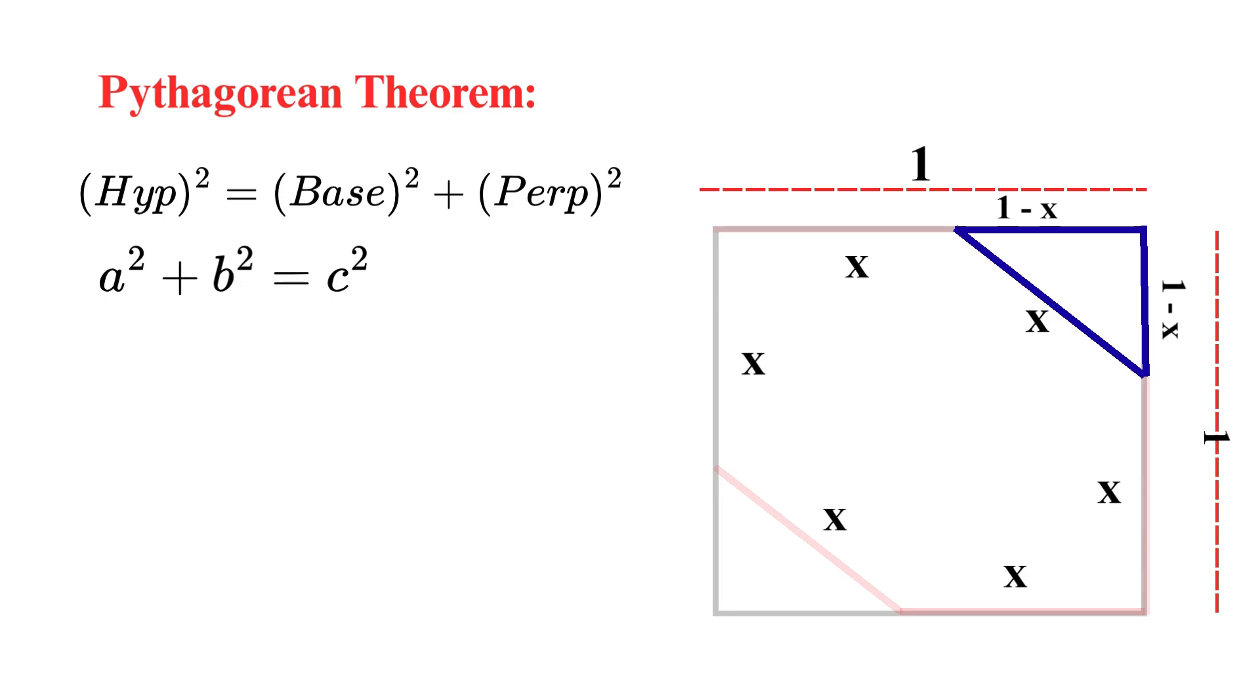So, let's apply this to our triangle. First, we need to identify which side is the hypotenuse. Remember, it's the side across from the right angle. In our case, that's the side with length x, the hexagon's side. And what are the two legs? Well, we just figured those out. They're both 1 minus x.